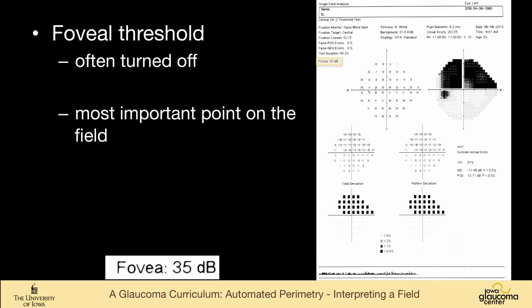As we go through the field, the foveal threshold, that's often turned off in some perimeters. It's an option to have it on or off. You can see 35 decibels. Really honestly, it's the most important point in this person's field is what their foveal threshold is.